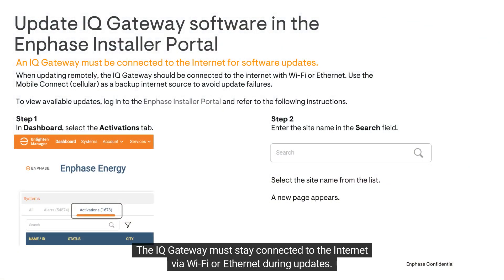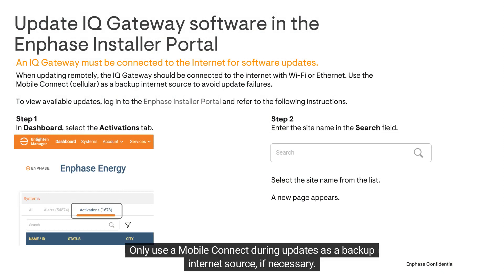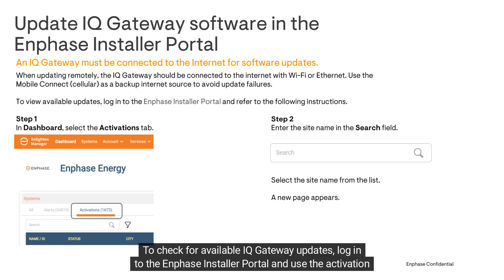The IQ Gateway must stay connected to the internet via Wi-Fi or Ethernet during updates. Only use a mobile connect during updates as a backup internet source, if necessary.